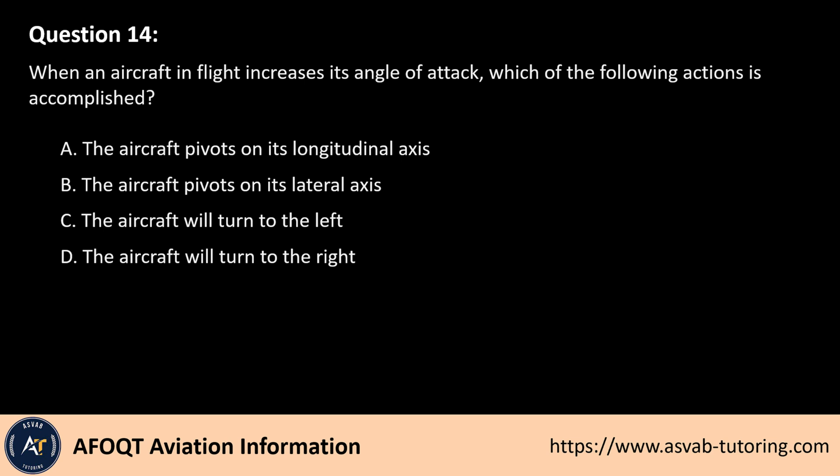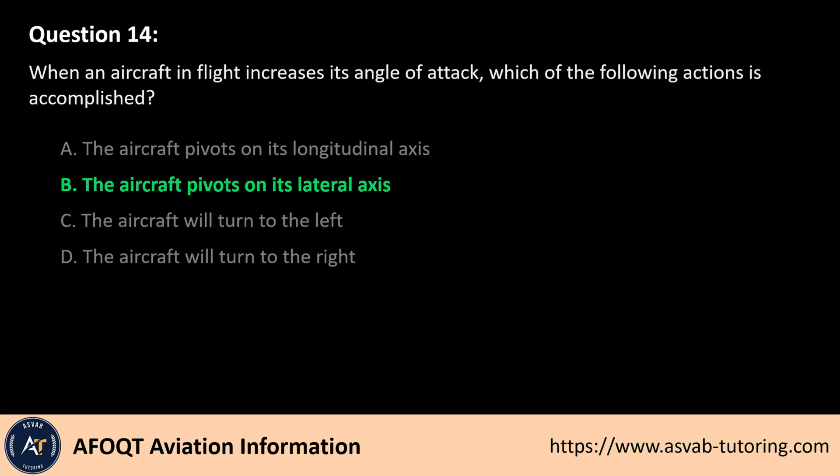The answer is B. When an aircraft increases its angle of attack, it pivots on its lateral axis. The lateral axis runs wingtip to wingtip, and movement around this axis is called pitch. Increasing the angle of attack raises the nose of the aircraft, increasing lift but also drag. This movement is controlled by the elevators on the horizontal stabilizer.